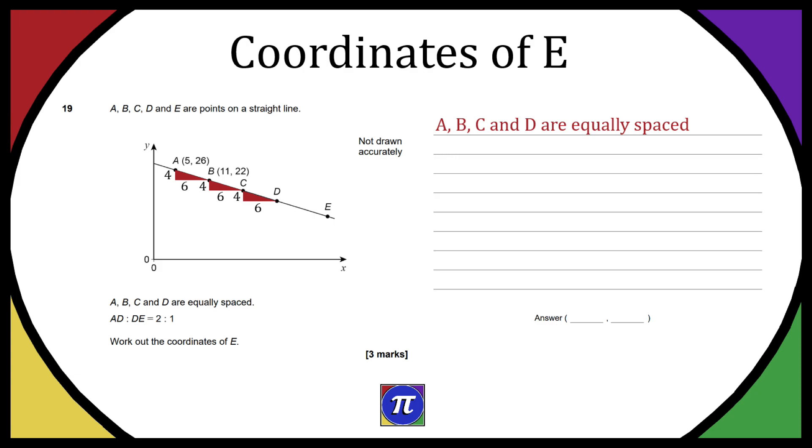So if we want to get from point B to C, all we have to do is take point B, then add 6 to the x value which is 11, then subtract 4 from the y-value which is 22. So 11 plus 6 and 22 minus 4 is (17, 18), so that's point C.